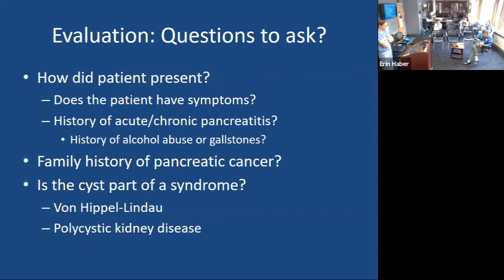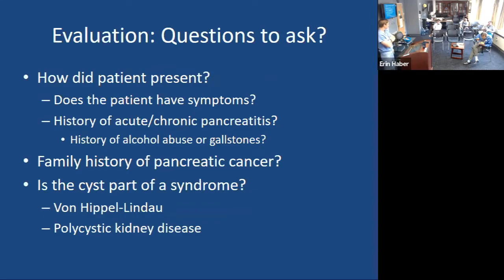What do you want to know? You want to know how they present — what led them to get the imaging that initially found these cysts. For the most part, these are asymptomatic people undergoing imaging for other reasons. If I had a nickel for every person that fell off a ladder while cleaning their gutters and was found to have one of these, I'd be relatively wealthy. You want to know their history: do they have a history of pancreatitis or anything that would predispose them to it, because a fluid collection in that setting has different ramifications.